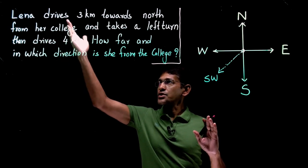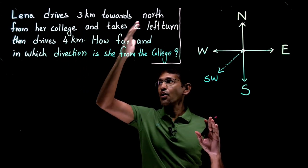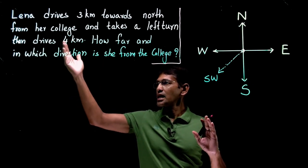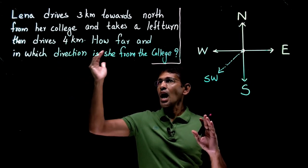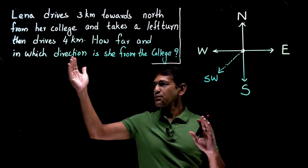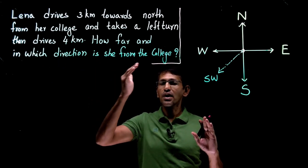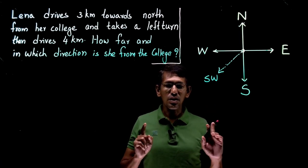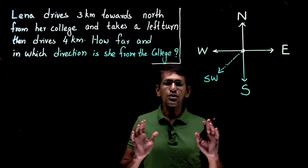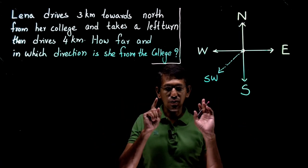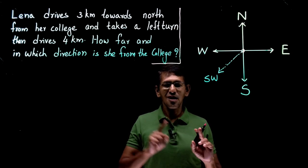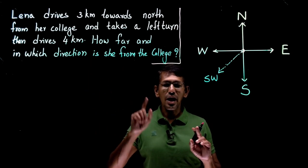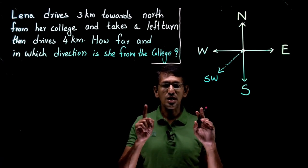Lena drives 3 kilometers towards North from her college and takes a left turn, then she drives 4 kilometers. How far and in which direction is she from the college? Rather than reading the question several times and wasting time, I suggest just looking at the question and starting to draw the diagram straight away.